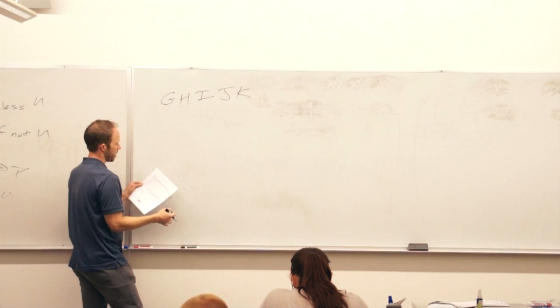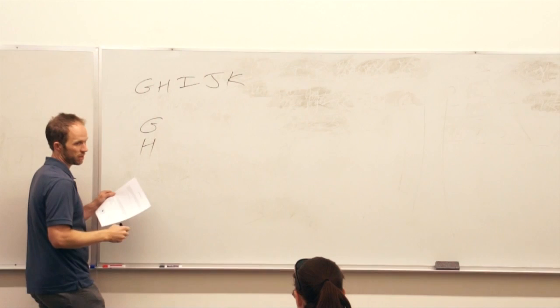I've got a group of two and a group of three. The rules are G and H have to be in the same group and I and J have to be in separate groups.